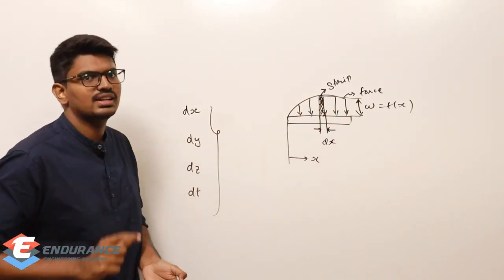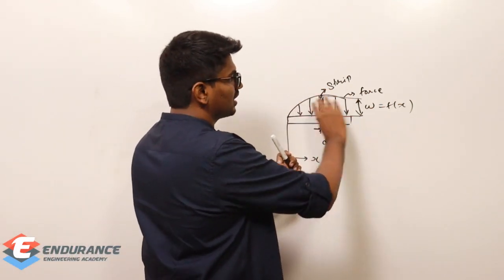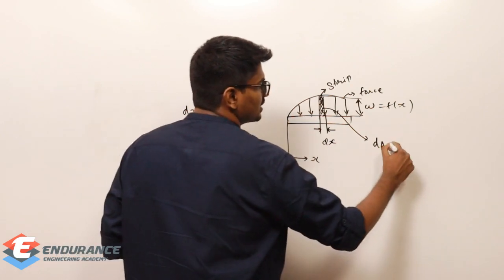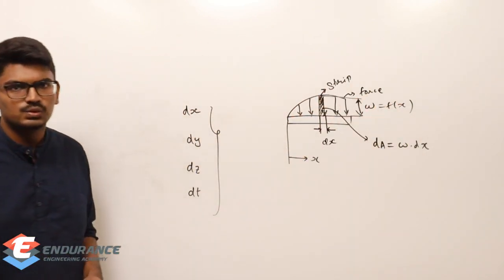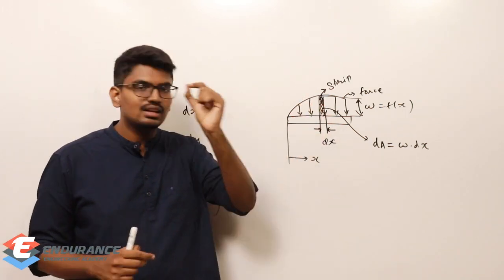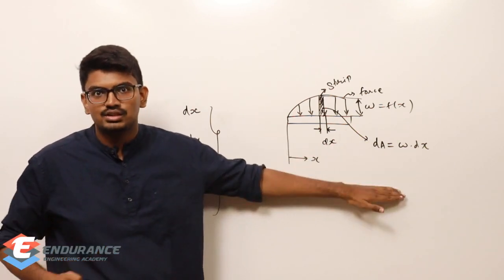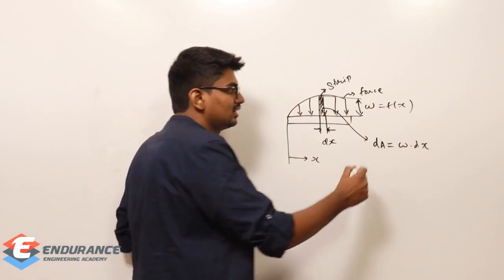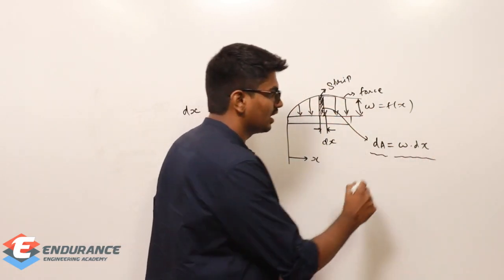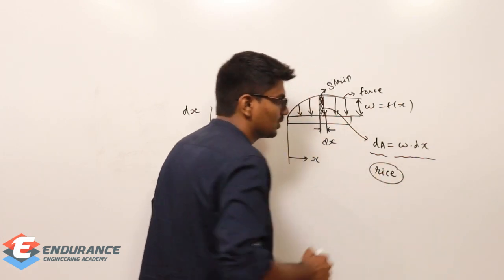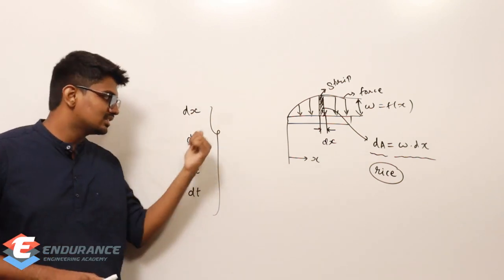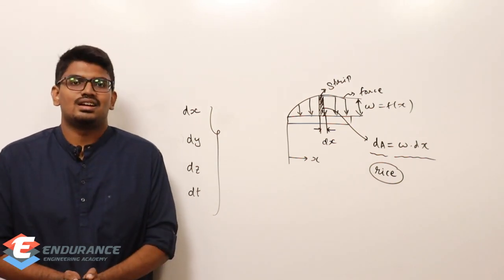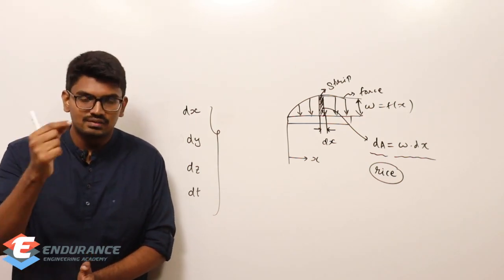Let's take a small section. In the total area, in the total distribution of load, we will consider the same thing. Let's take a small section. What is the height? Height is w, and the distance is dx. So w into dx — I will take a small section, just for an example. So what we do now? In the small element, we analyze the same thing. Obviously, we will try to integrate it. Basically, we will integrate the same kind. So we create the small section and this one is the main section.